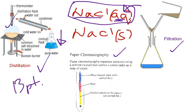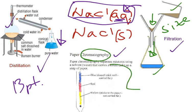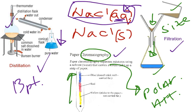Filtration separates based on the difference in size — another physical separation process. The water particles are able to pass through the filter, but the sand gets trapped in the filter cup. Chromatography is pretty unique because it separates by difference in polarities or the attraction of substances. Polar substances dissolve in water and get carried up the paper column, while nonpolar substances tend to stick to the nonpolar paper at the lower extremities.